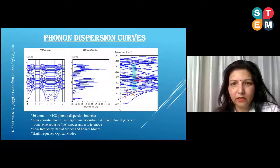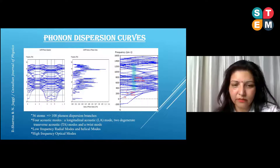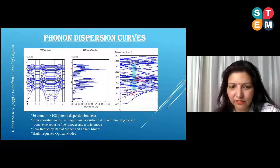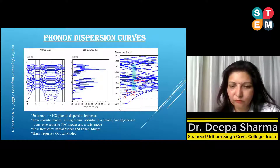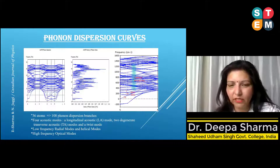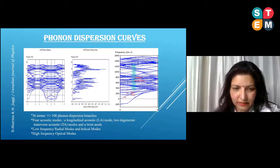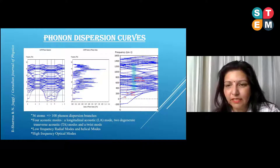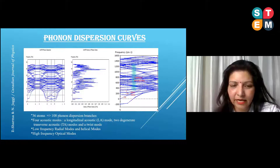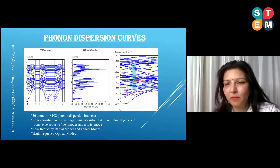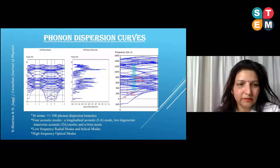These are the phonon dispersion curves with a total of 108 phonon dispersion branches. We allocated modes to branches: there are four acoustic modes — one longitudinal acoustic mode, two transverse acoustic modes, and one twist mode. There are also low-frequency radial modes RM1 and RM2, helical modes, and high-frequency optical modes shown in the higher frequency region of the diagram.